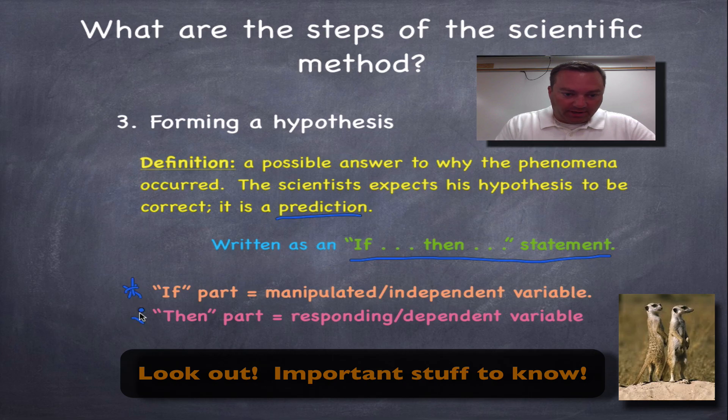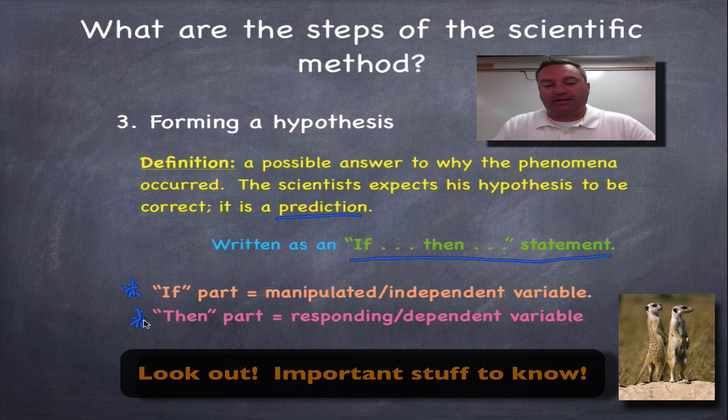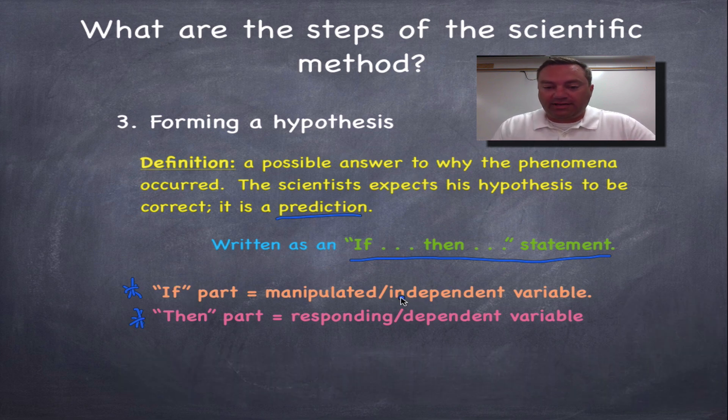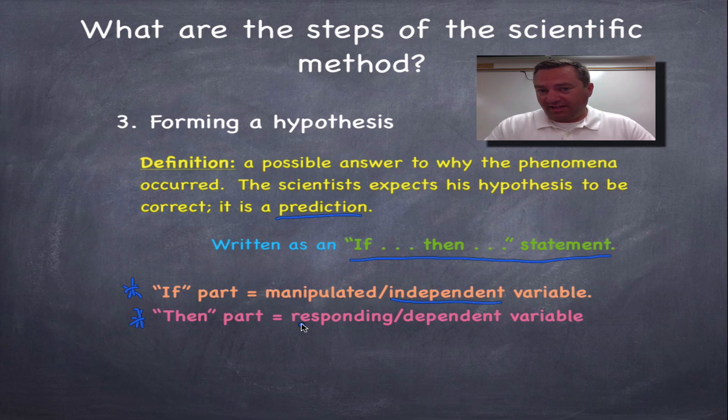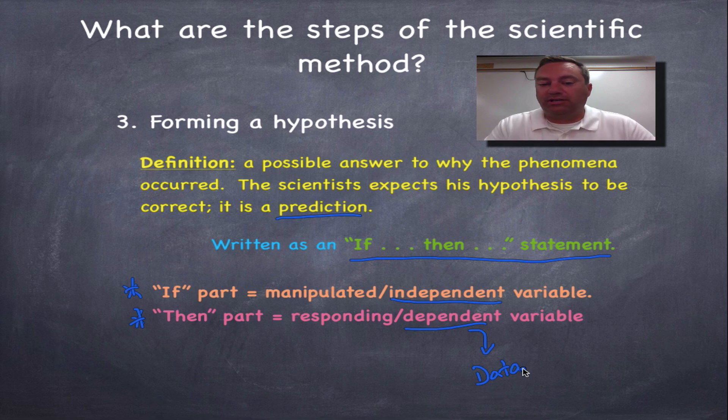Really, really important stuff down here. Make sure you make a note of these in your notes because you are going to need to know this on your test. The if part refers to the independent variable. Sometimes it's referred to as a manipulated variable. In other words, the if part is the change that you're putting between the two experimental groups, and you want to see what that change causes. So the independent variable is what you're actually testing.